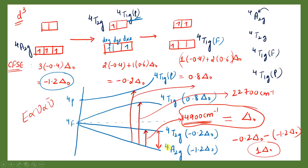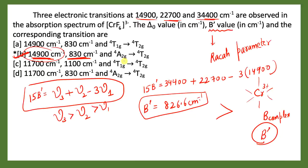From the diagram, transition ν₁ corresponds to 4A2g → 4T2g (option B). This confirms our answer. I hope this video was helpful for you. Happy Learning!